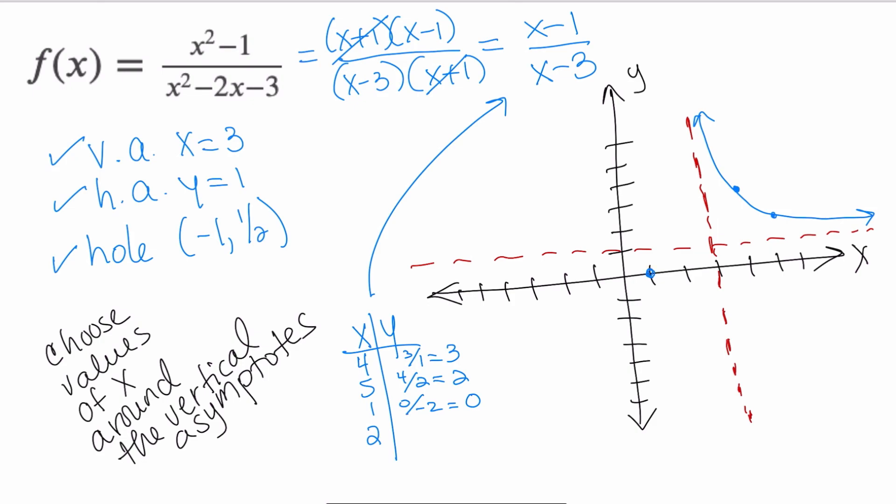So at 1, I'm at 0, which is awesome because I was able to find the x-intercept. Then I'm going to substitute 2. 2 - 1 is 1. 2 - 3 is -1. That gives me 1/-1, which is -1. So at 2, I'm at -1.